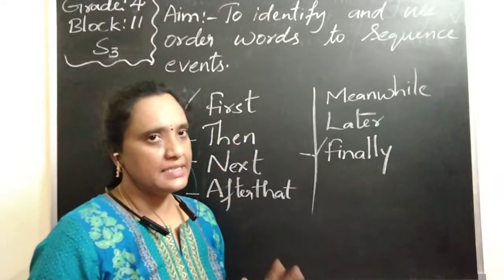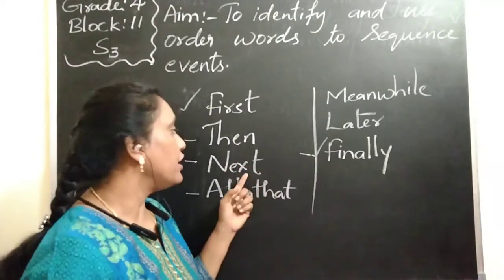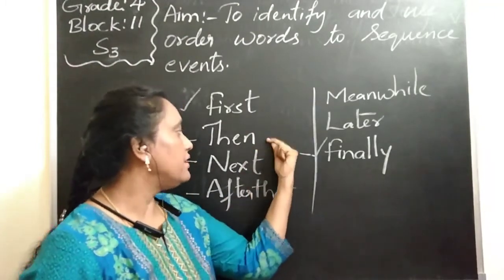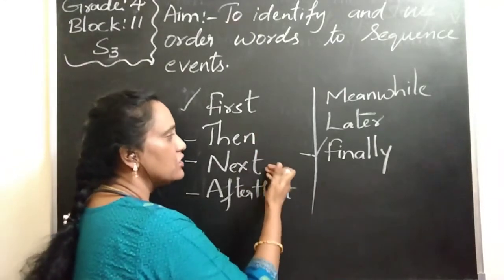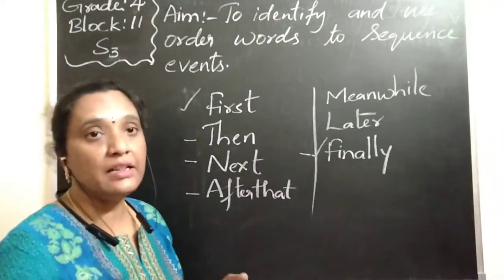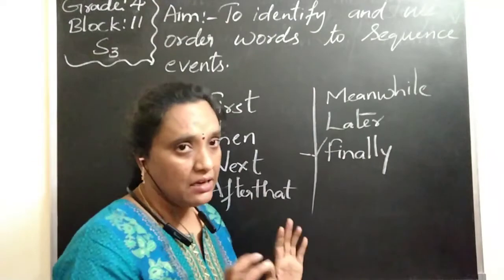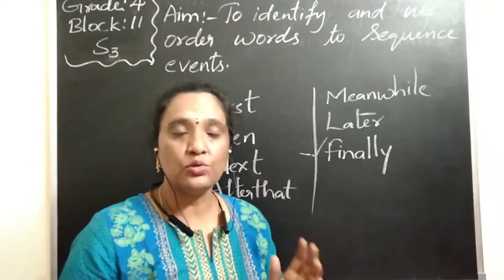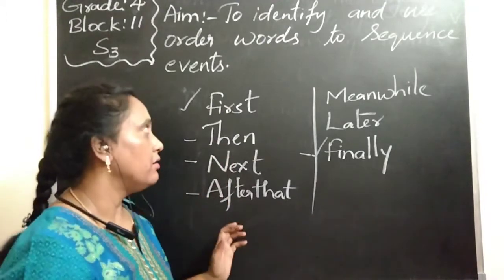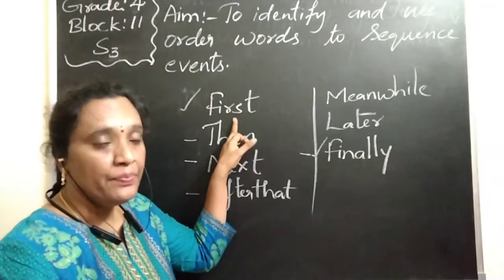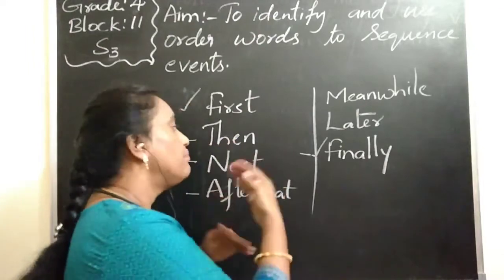Whatever a sequence starts with, we want to begin with 'first.' Then we can use 'then' or 'next' for the second sentence, and 'after that' following those. These middle words — then, next, after that — can be repeated as many times as you need in the paragraph. The last ending sentence must contain the word 'finally.' So when arranging something in order, write 'first' for whatever happens first, 'finally' for the last event, and use the other words in between as many times as you need, interchanging them.